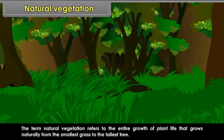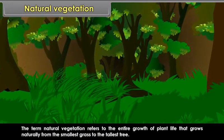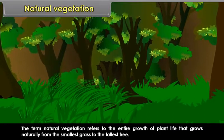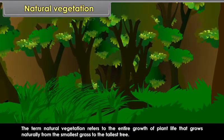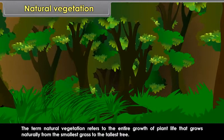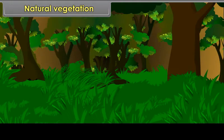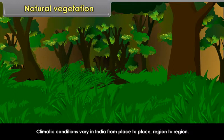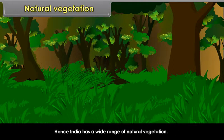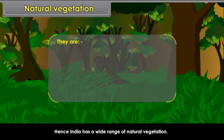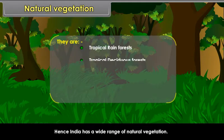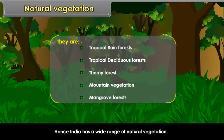The term natural vegetation refers to the entire growth of plant life that grows naturally, from the smallest grass to the tallest tree. Climatic conditions vary in India from place to place and region to region. Hence, India has a wide range of natural vegetation: tropical rainforests, tropical deciduous forests, thorny forests, mountain vegetation and mangrove forests.